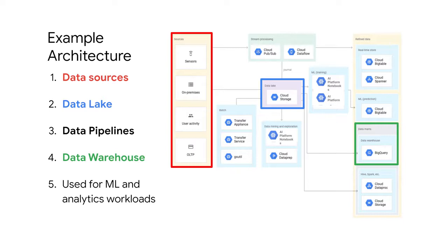Let's bring back one example solution architecture diagram that you saw earlier in the course. The data lake here is Google Cloud Storage buckets right in the center of that diagram. It's your consolidated location for raw data and it's durable and highly available. In this example, our data lake is those Google Cloud Storage buckets. But that does not mean that Google Cloud Storage is your only option for data lakes on GCP. Cloud Storage is one of a few good options to serve as a data lake, but it's not the only one.